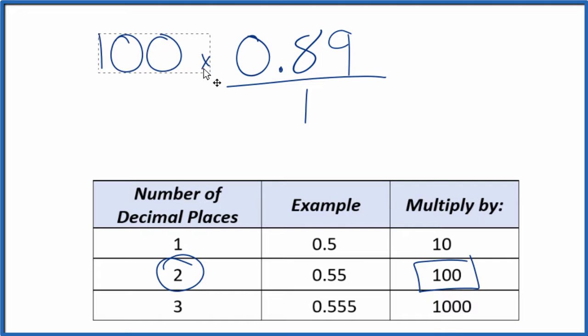So we multiply 100 times 0.89, we end up with 89. There's our whole number.